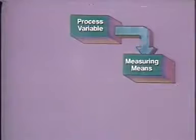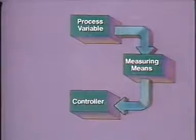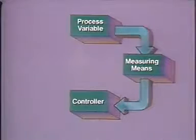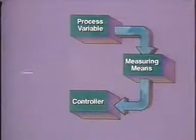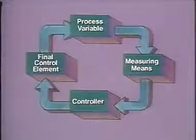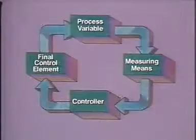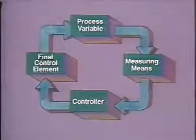In any control situation, four things are necessary. First, there is a process variable that needs measurement and control. For each process variable, there is a measuring means — one or more instruments that can measure the process variable. There must be some kind of control mechanism to receive the measurement information and determine how it compares with the desired value or set point, and also tell the valve what action, if any, it should take. And there is a final control element, which is usually a valve. The final control element makes the actual process change that keeps the process variable at set point. These four elements are called a control loop.